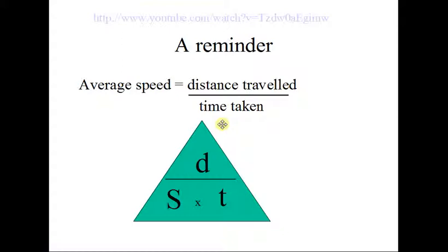It's really useful if you know how to change the subject of an equation from maths already. If unfortunately that skill is not in place, don't worry too much about it. This triangle really does help. You cover what you are looking for, and you see the relationship between the other two. If you're looking for distance, you cover distance, and you're left with speed times time. If you're looking for time, you cover time, and it's distance over speed, and so on.